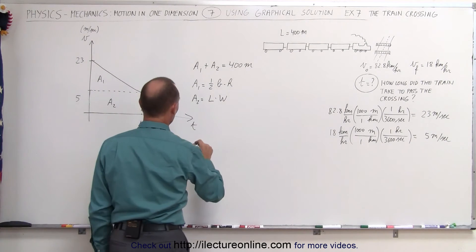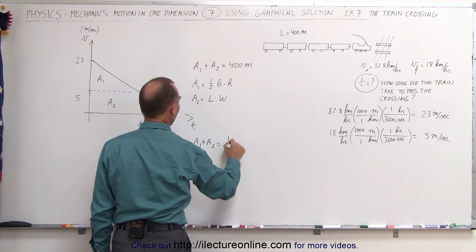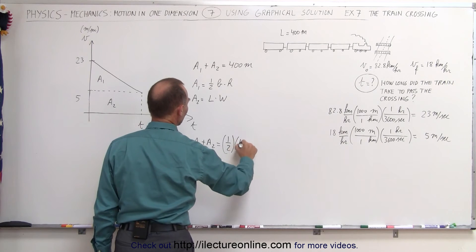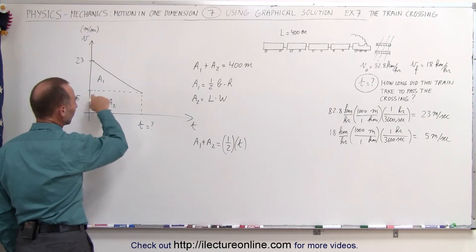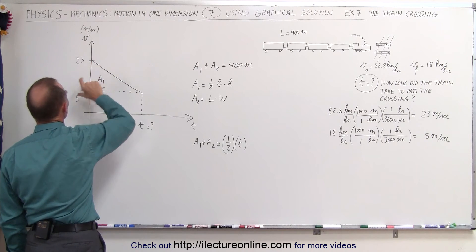So let's go ahead and plug that into an equation, so we know that A1 plus A2 is equal to A1 is one half, the base, which is the time that it took, the base would be this distance right here, and the height of the rectangle would be from 23 to 8, the difference of that.